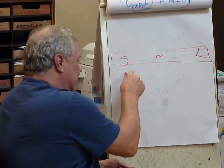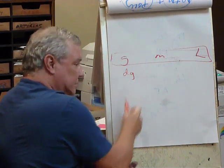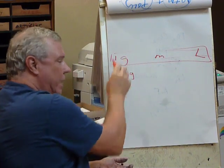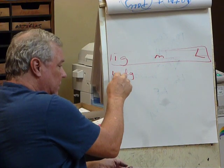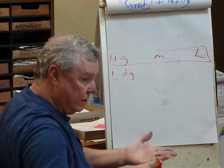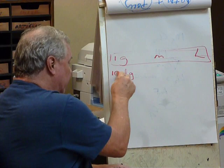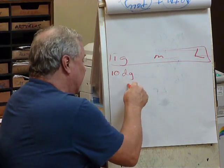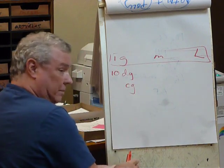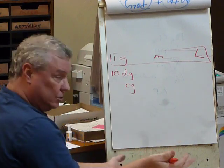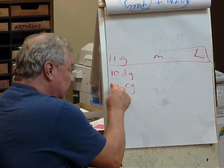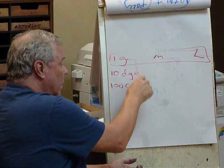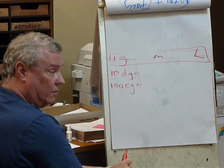Now below grams, we've got something called desigrams. One gram is equal to ten desigrams. And then below desigrams, we've got centigrams. Centigrams for a century, how many years? A hundred. So one gram is equal to ten desigrams, or one hundred centigrams.